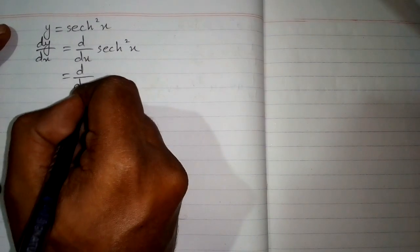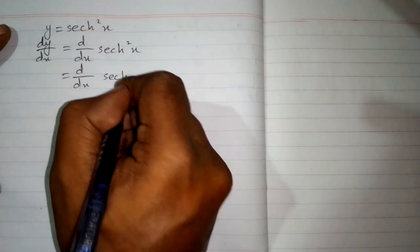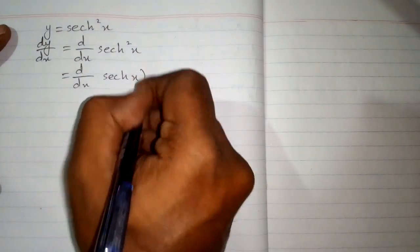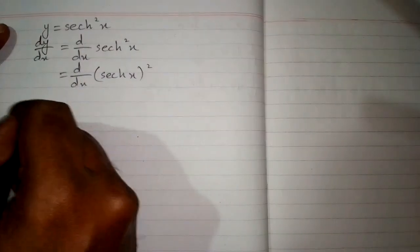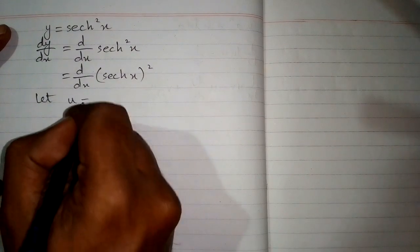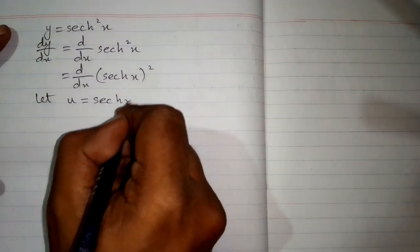This can be written as (sech x) squared. Now let u equal hyperbolic sech x.